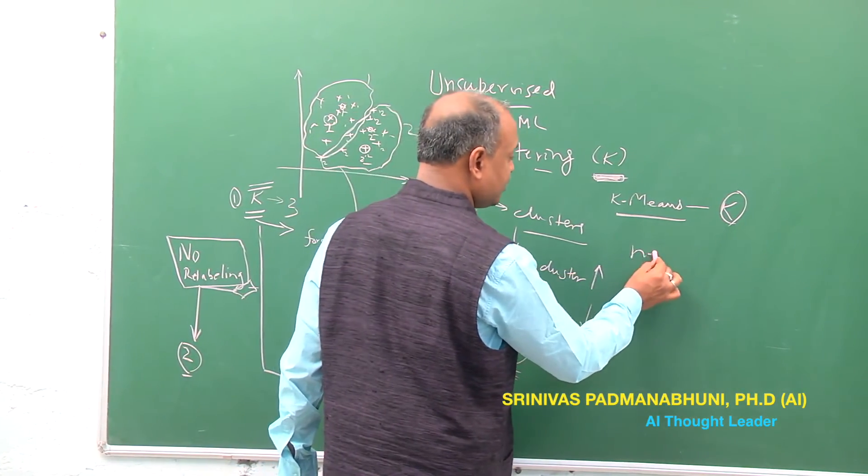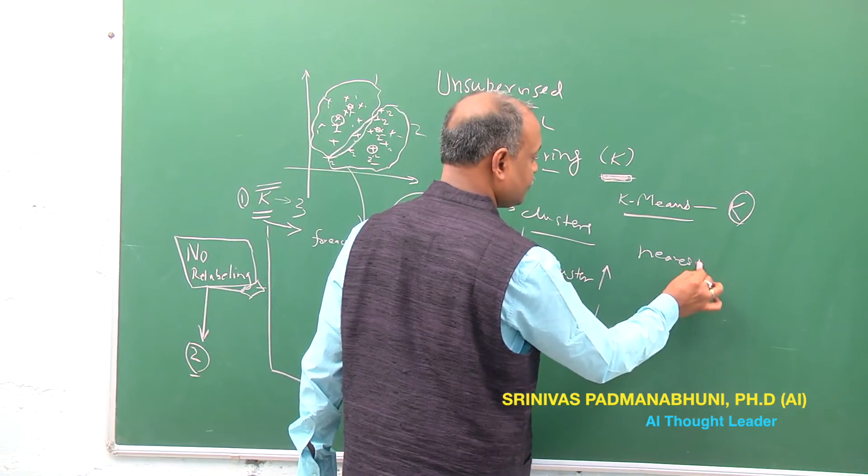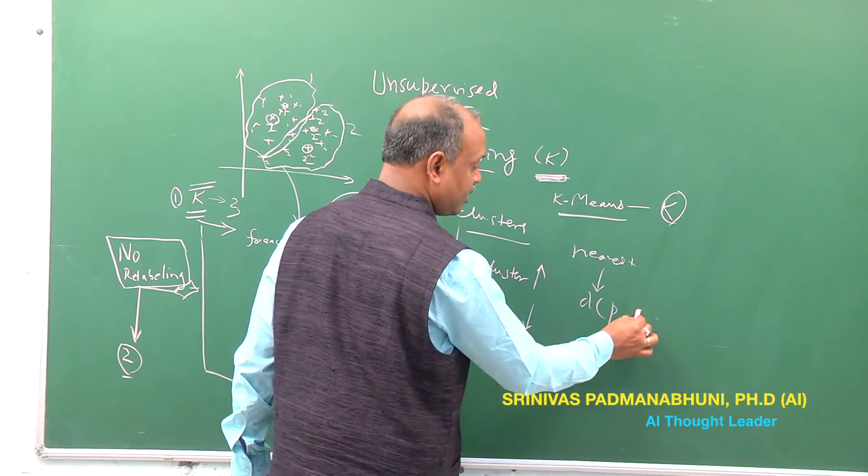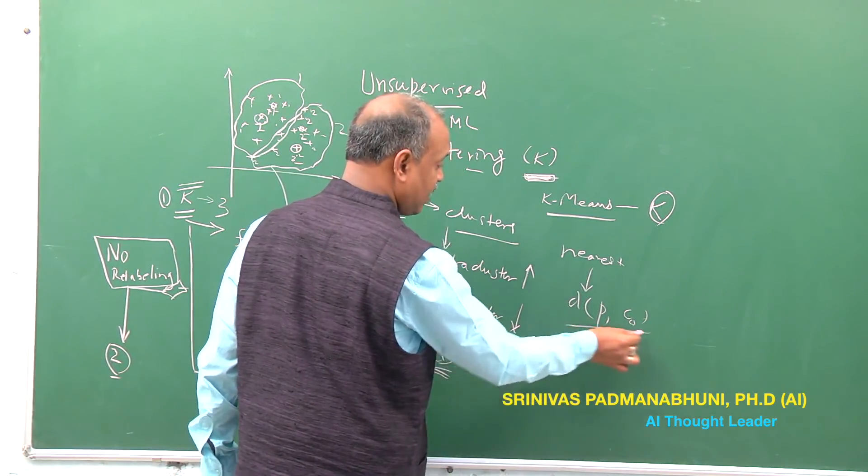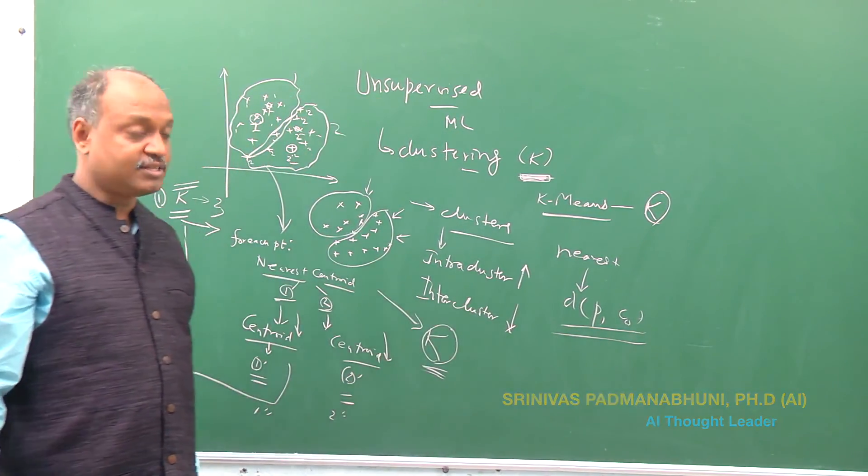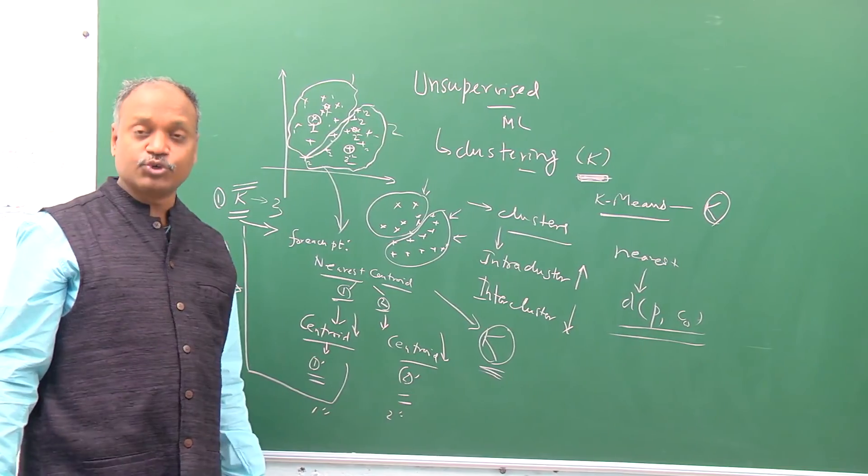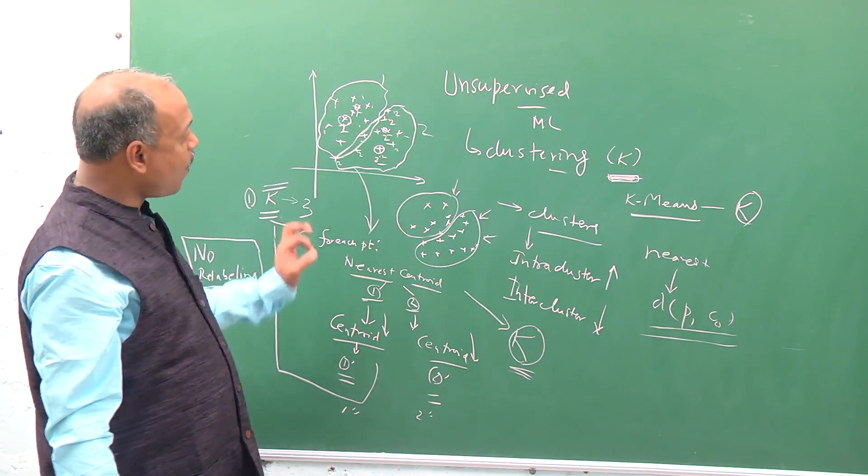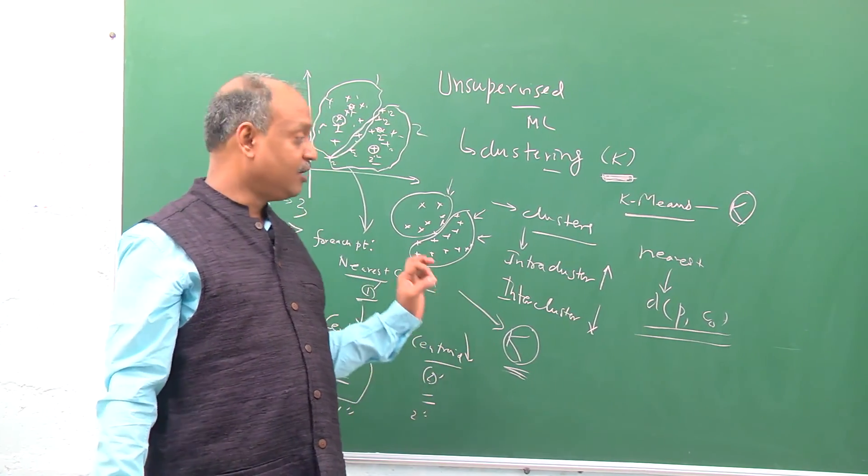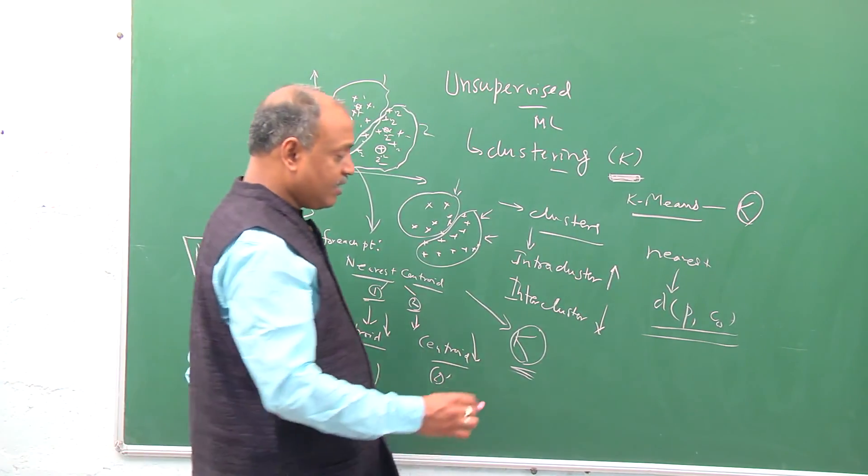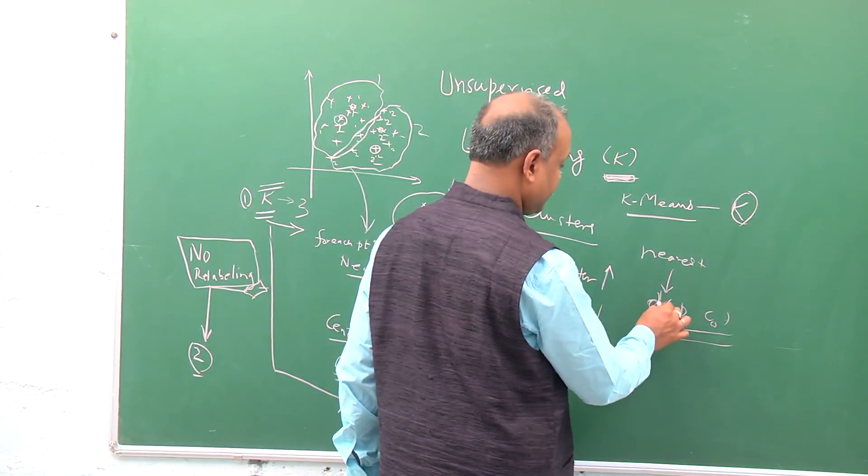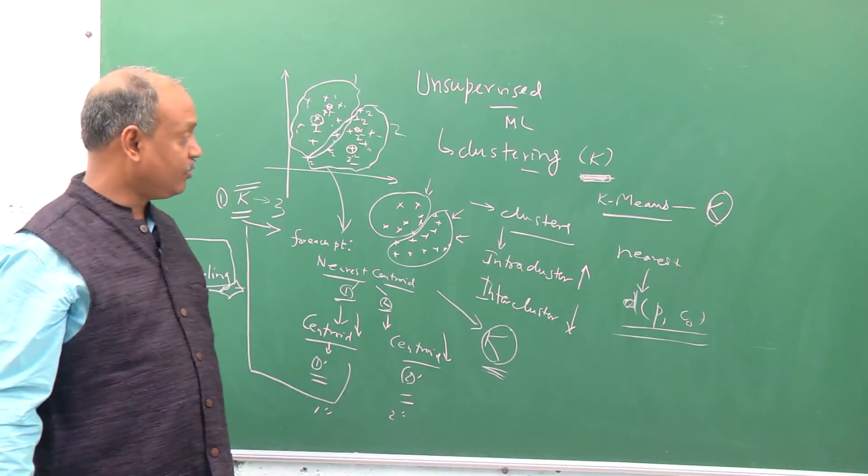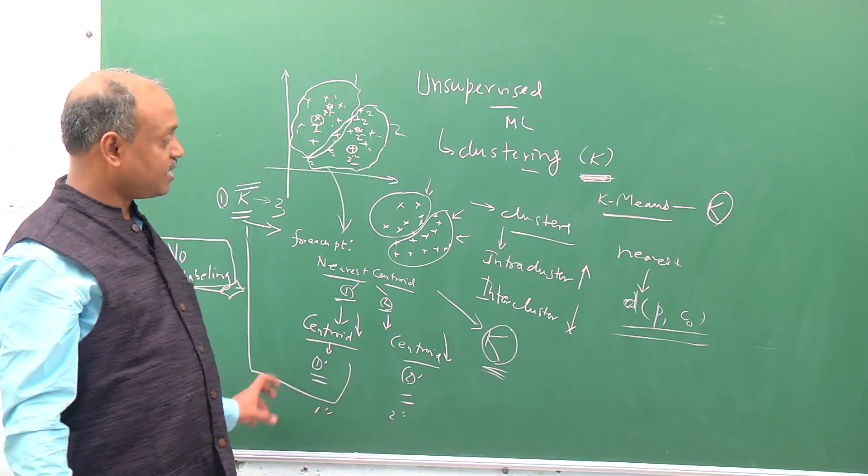The key important thing is also when you say nearest centroid, then there is a point P and centroids C0 and C1, you need to have a notion of distance. So the nearest distance notion also plays a very important role in determining how and what cluster you would assign to a particular point. Different distance measures are equally important when you're describing clustering assignments.